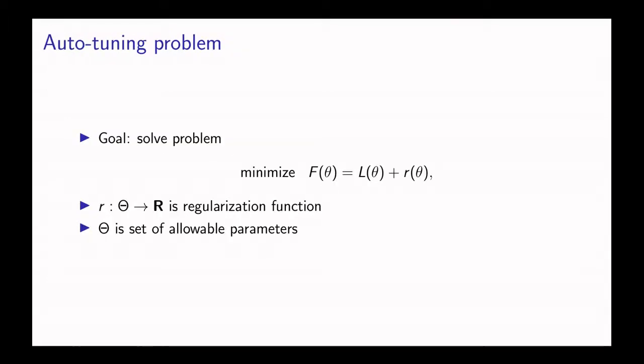The ultimate goal is to solve the following problem: we want to choose the parameters in a Kalman smoother so that we get a small prediction error and also have a small value of some regularization function r.